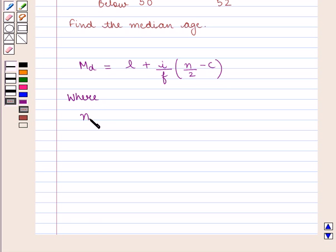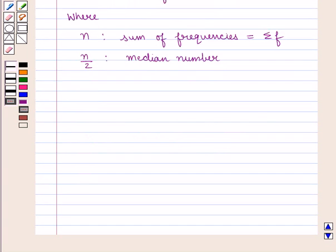n is the sum of the frequencies, given by summation of f. n/2 is the median number. L is the lower limit of the median class.